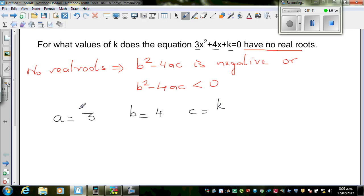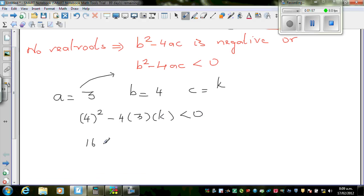Let us substitute this into this equation. So this is (4)² - always write in brackets - minus 4 times 3 times k has to be less than 0. So this is 16 - 12k is less than 0.